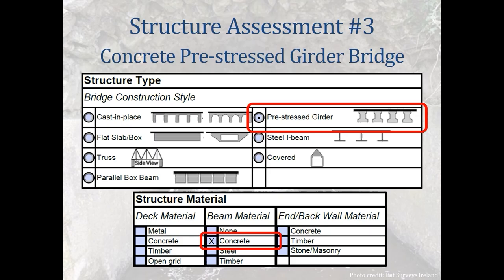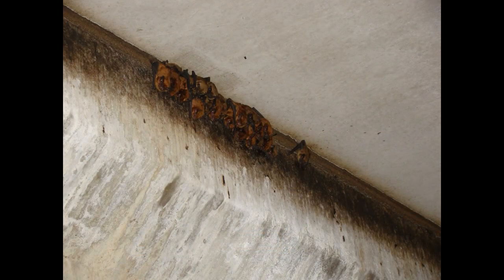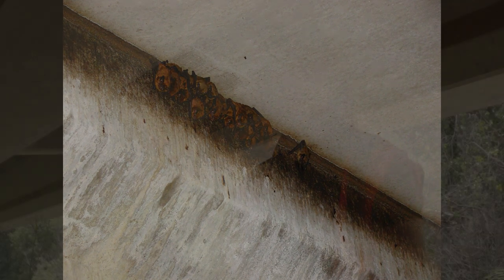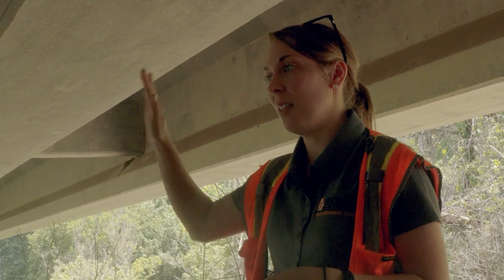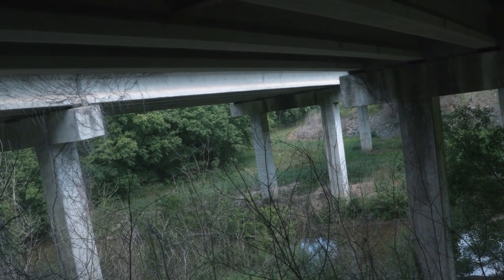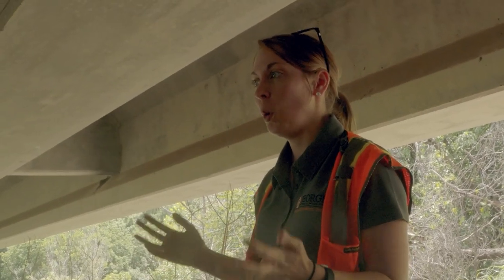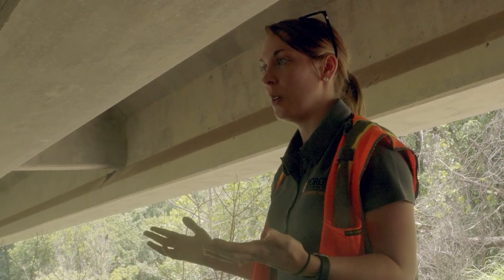Structure Assessment Number 3 is a pair of concrete pre-stressed girder bridges carrying a divided four-lane state highway over a large perennial stream. The bridge is over 100 feet above the stream bed and cannot be completely inspected without construction equipment or an emergence count. The area where bats are roosting here is completely different from what we saw before — rather than expansion joints, the bats are just on the rough concrete sides of the bridge. This bridge is very tall and over high water, so we want to take the opportunity to talk about other tools in the toolbox for inspections when a spotlight and binoculars aren't sufficient.